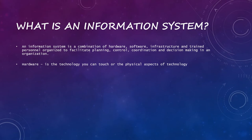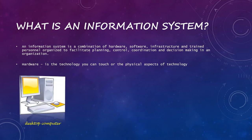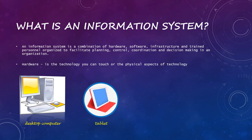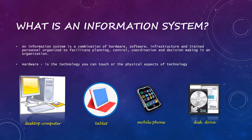So what is an information system? By definition, it is a combination of hardware, software, infrastructure, and trained personnel organized to facilitate planning, control, coordination, and decision-making in an organization. Hardware is the technology that you can touch, or the physical aspects of technology, such as desktop computers, tablets, mobile cell phones, and disk drives.